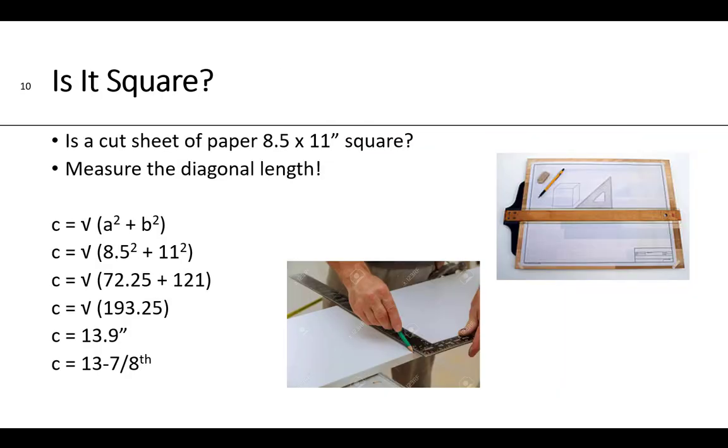Another example of using trigonometry in printing is to determine the squareness of a cut sheet of paper. So if I cut a piece of paper to 8 and a half by 11 inches, how do I know if it's square? Well you can measure its diagonal length. So if you do that it should come out to 13 and 7 eighths of an inch in fractional form, or 13.9 in decimal form.